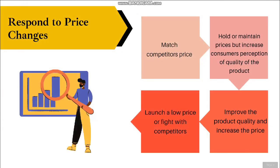Suppose a company learns that a competitor just reduced its price and decides this reduction will likely harm its sales and profits. If the company believes it will not lose too much market share, it may wait and respond when the competitor changes price. However, if the company waits too long, the competitor gets stronger as its sales increase. The company should then take corrective action: reduce price to match competitors, raise the perceived value of its offer, maintain quality as it cuts price, or launch a low-price fighter brand.